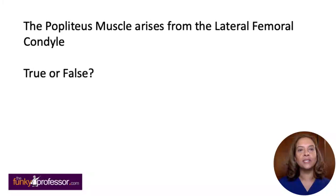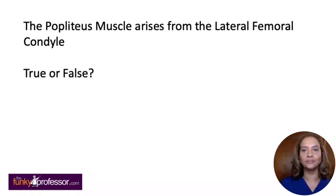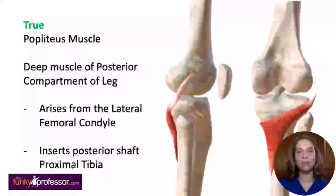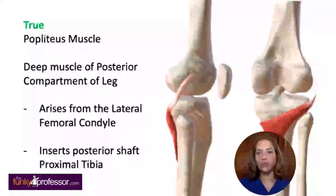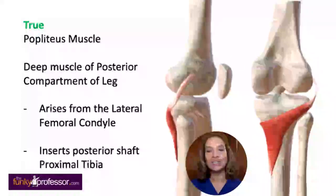The popliteus muscle arises from the lateral femoral condyle — is that true or false? The answer is in fact true. The popliteus muscle is one of the deep muscles of the posterior compartment of the leg and it does arise from the lateral femoral condyle, inserting onto the posterior aspect of the superior shaft of the tibia.